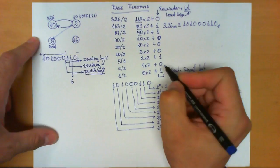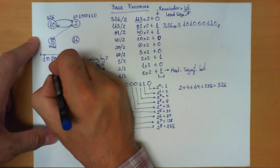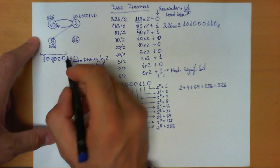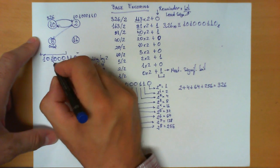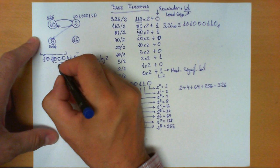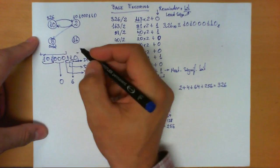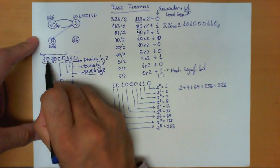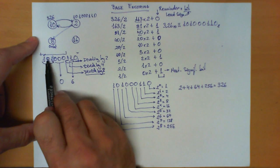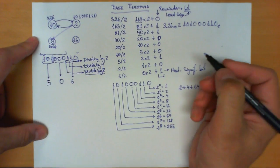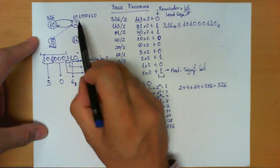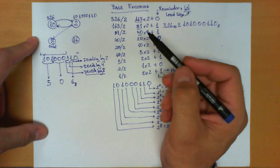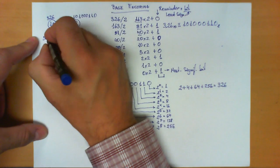Dividing by 8 again, we take another 3 bits. This division produces a remainder of 0 and a new 3-bit quotient. Dividing once more, the last group 1, 0, 1 gives 4 plus 1 equals 5. So 5, 0, 6 in base 8 is the same as 101000110 in base 2, which equals 326 in base 10.